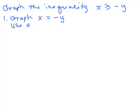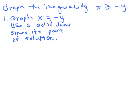So that's the first thing you need to do is figure out how to graph x equals negative y and use, do we want to use a dotted line or a solid line? It's part of the solution so we're going to use a solid line since it's part of the solution, that whole line. So you want to get out some graph paper and graph that line x equals negative y.